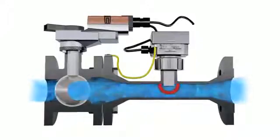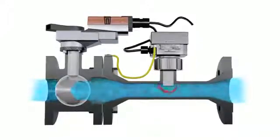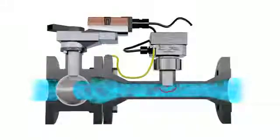The flow characteristic can be changed from equal percentage to linear using the BLEEMO PC tool.